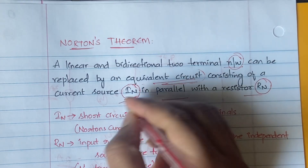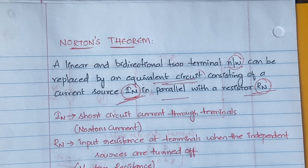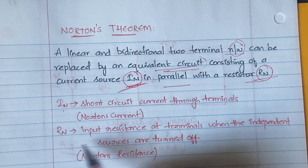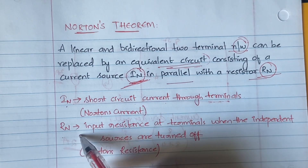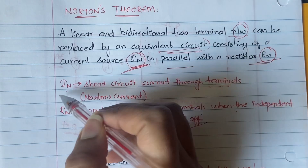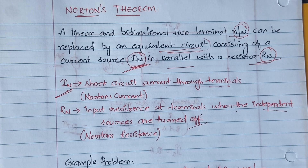When a circuit is given to you, you have to first find out the value of IN and the value of RN, and then calculate whatever is asked. IN is Norton's current, meaning the short-circuit current through the terminals. RN is Norton's resistance, meaning the input resistance at the terminals when the independent sources are turned off. You do not turn off the independent sources when finding IN, but you do turn them off when finding RN.